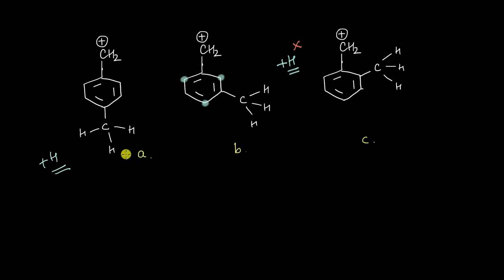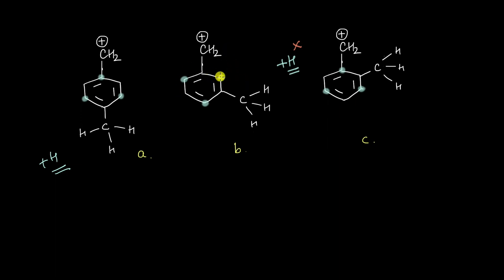To summarize: a CH3 group at the para or ortho position brings about a lone pair of electrons right under the cation, which helps in delocalizing this positive charge even onto these methyl groups. But if we put a CH3 group at meta, there won't be a lone pair right under this carbon atom, so this methyl group will not be able to delocalize the cation and won't add to the stability of the benzyl cation. Therefore, between structures a, b, and c — a and c are going to be more stable compared to b.